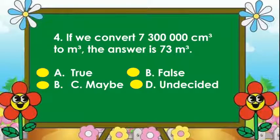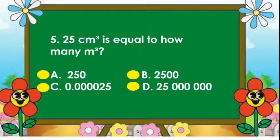Number four, if we have converted 7,300,000 cubic centimeter to cubic meters, the answer is 73 cubic meters. Number five, 25 cubic centimeter is equal to how many cubic meters?